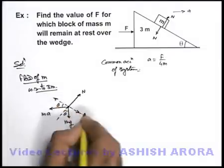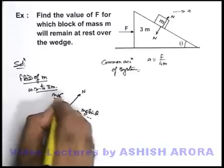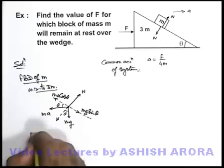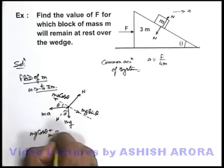Along the incline the two forces are mg sine theta and ma cosine theta. Perpendicular to incline it is mg cosine theta plus ma sine theta.